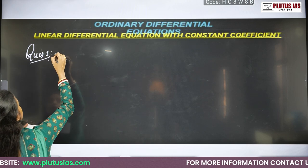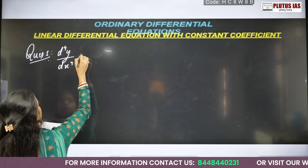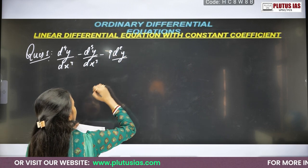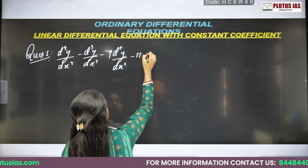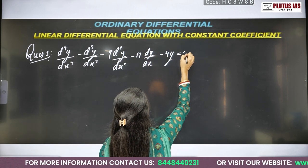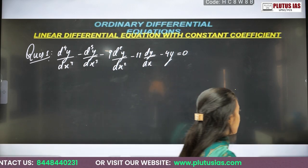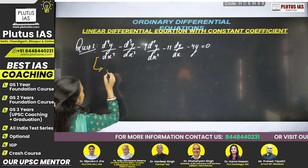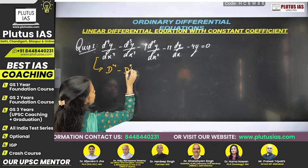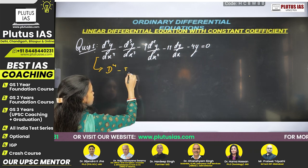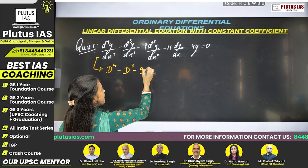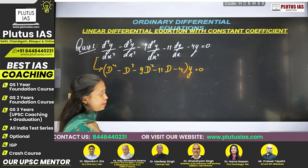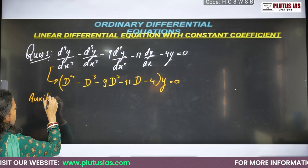Question number one: d⁴y/dx⁴ minus d³y/dx³ minus 9·d²y/dx² minus 11·dy/dx minus 4y equals 0. In operator notation, changing d/dx to capital D, it becomes: (D⁴ minus D³ minus 9D² minus 11D minus 4)y equals 0. The next step is to find the auxiliary equation, which is m⁴ minus m³ minus 9m² minus 11m minus 4 equals 0.